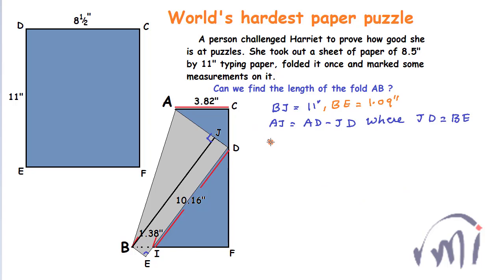And now we can say AJ will be equal to AD which is 8.5 minus 3.82 minus JD which is equal to BE so minus 1.09. So AJ will be equal to 3.59 inches so AJ will be equal to 3.59 inches.